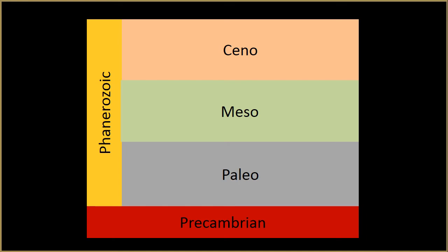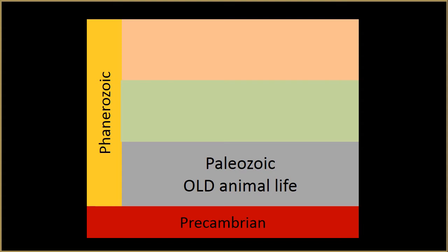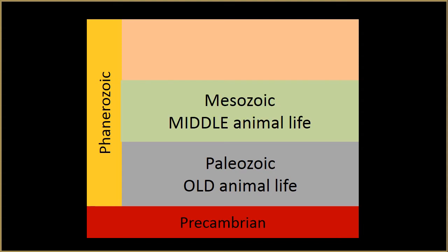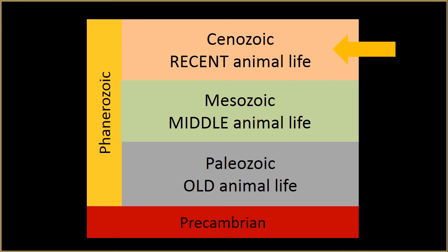The prefixes are what make the words reflect the idea of relative age. "Paleo" means old, "meso" means middle, and "ceno" means recent. So Paleozoic means old animal life, Mesozoic means middle animal life, and Cenozoic means recent animal life. In other words, these names reflect the idea that the fossilized creatures found in the Paleozoic are older than those fossilized in the Mesozoic, which are older than those preserved in the Cenozoic.